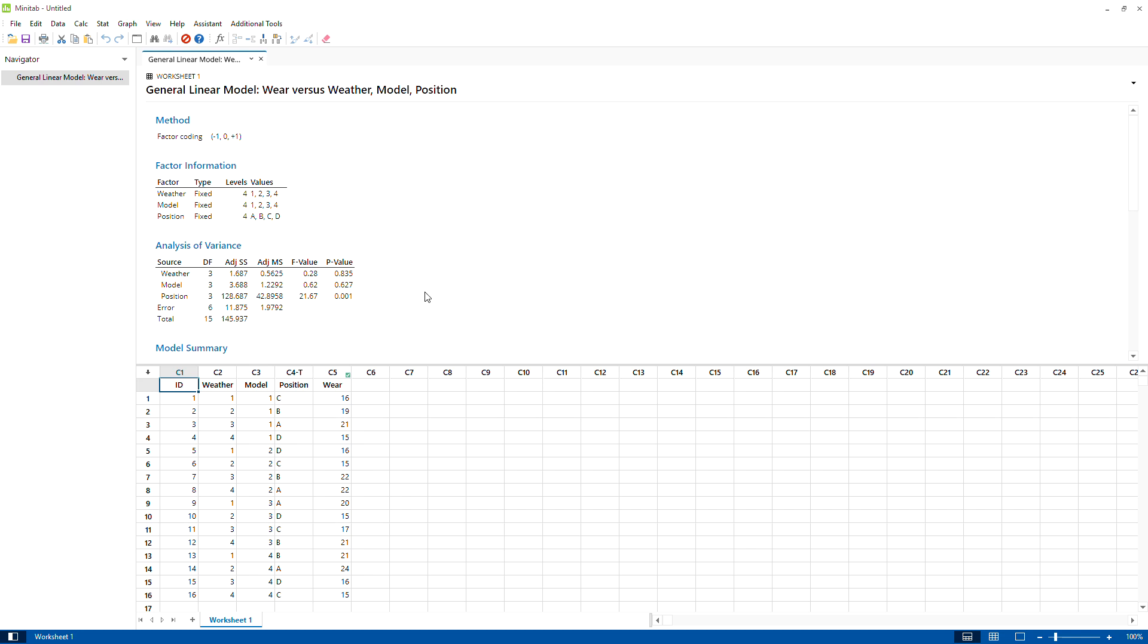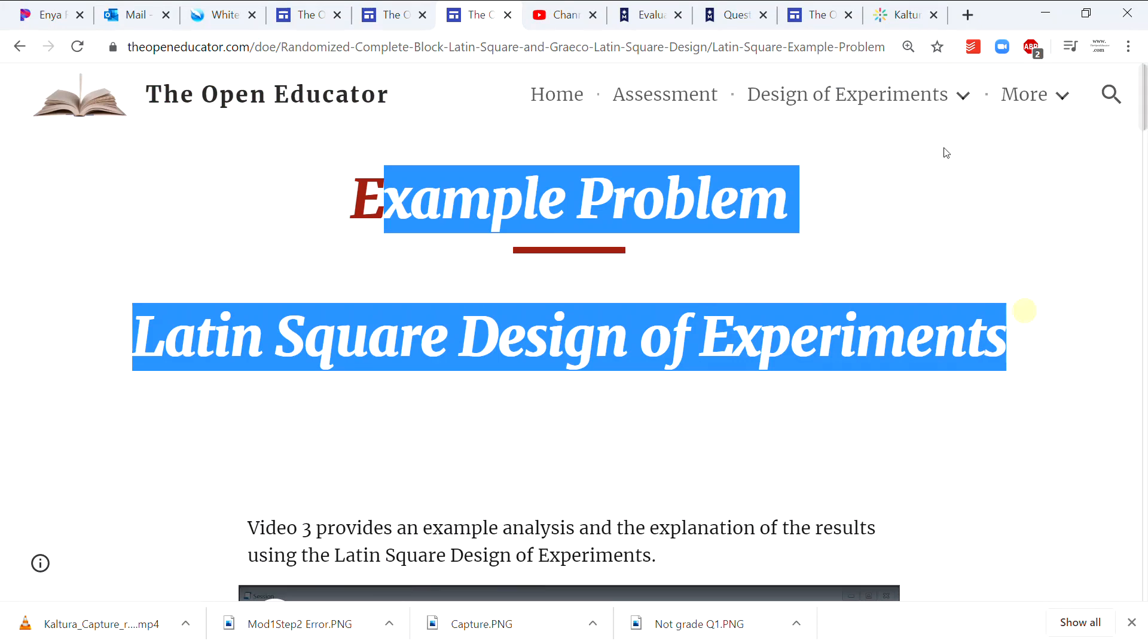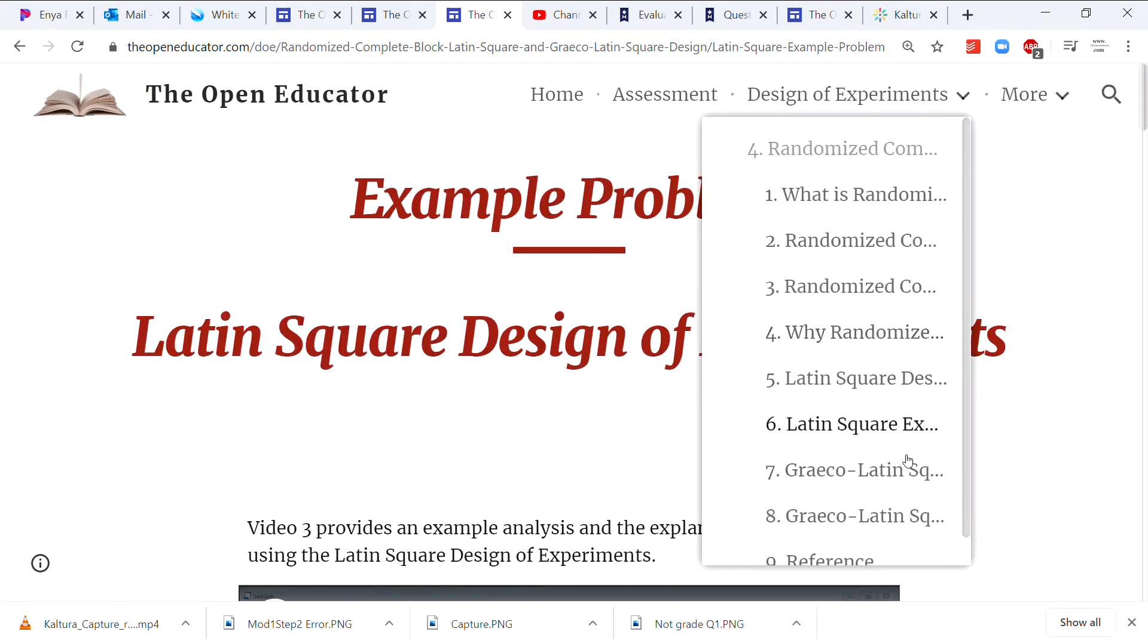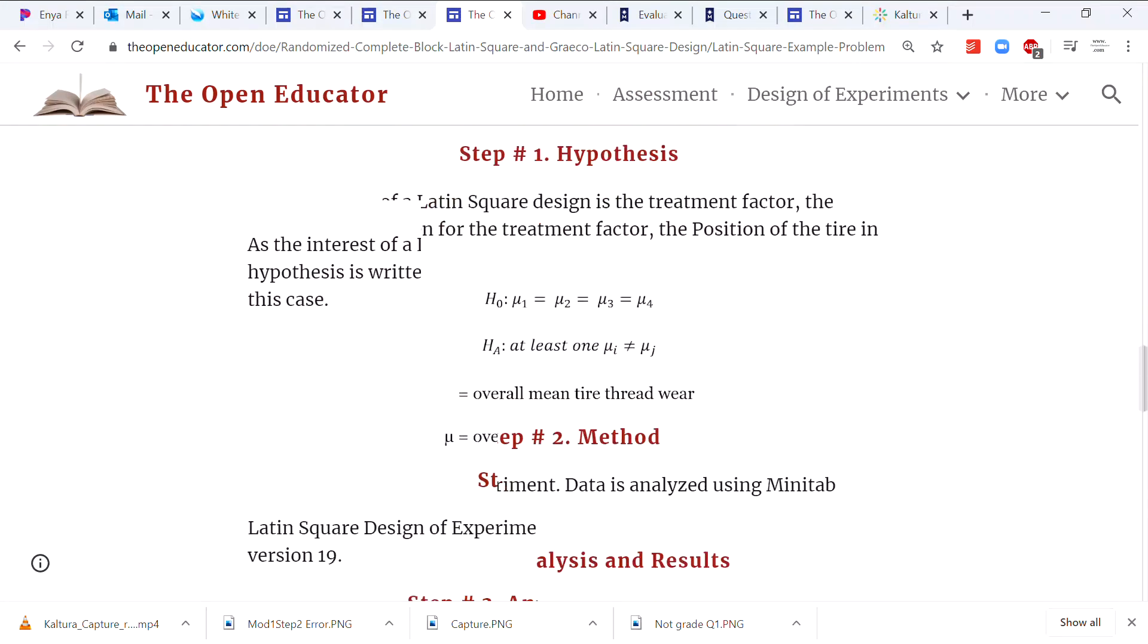As you can see here, the weather and the model of the car were not significant, but the position is significant. To know the full description of this problem you can go to theopeneducator.com under randomized complete block design module for this Latin square example.